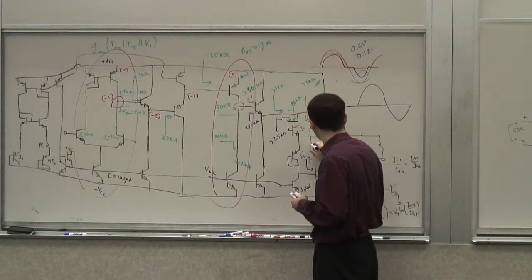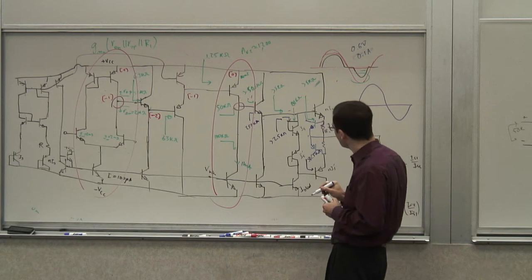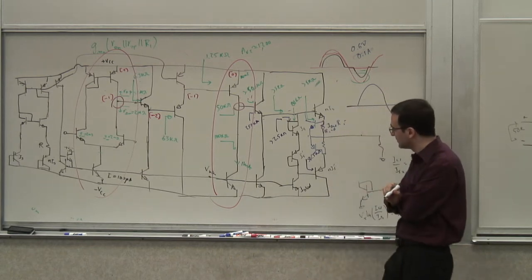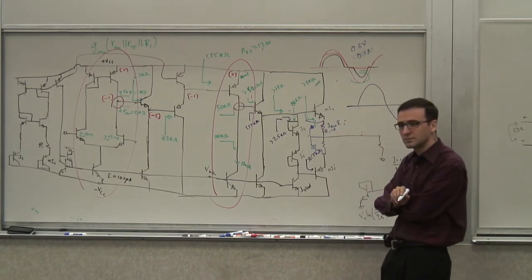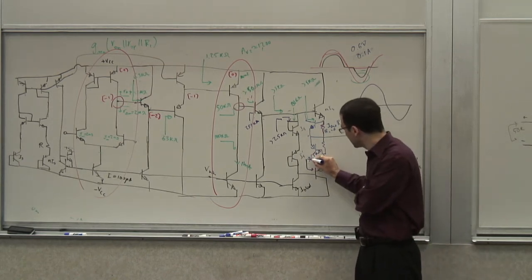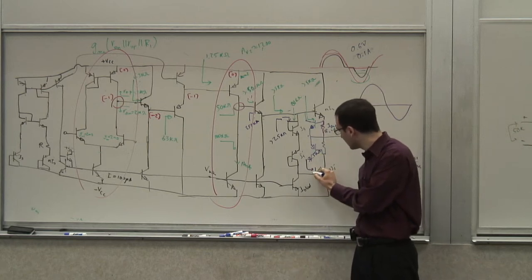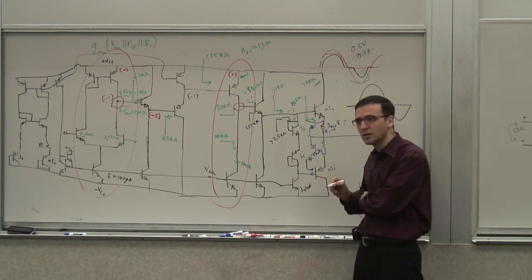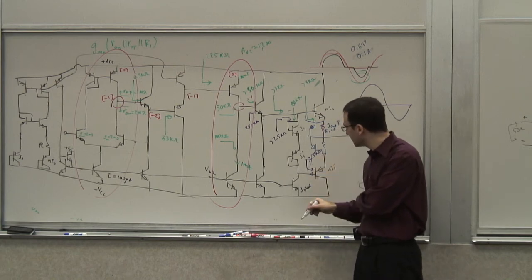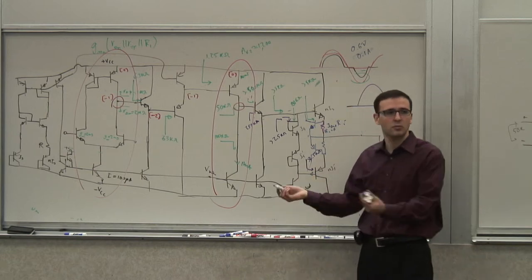So if I want to detect this, what I can do is use a PNP like this. Now what do I do with this current? This current becomes significant when this voltage drop is large — this is an injection current. What is the base current of this guy? The base current is going out. But if I just pour it into this guy, it will all go into this transistor. So this transistor can sink more current.